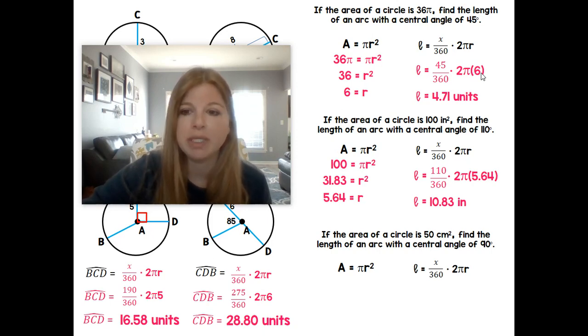If the area of a circle is 50 centimeters squared, find the length of an arc with a central angle of 90 degrees. Last one. So 50 equals πr². Divide both sides by π. Square root. Plug in my angle of 90 with my radius of 3.99. And we get our length value.